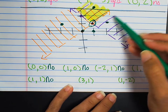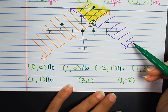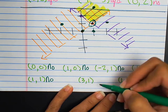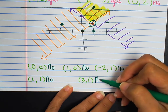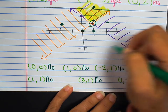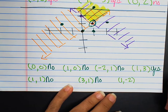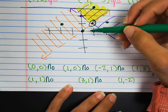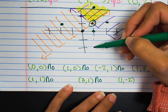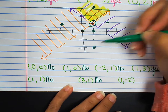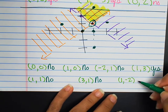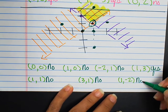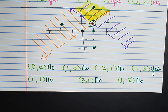Over three, up one. This is a solution to the purple inequality, but it is not a solution to the system. And the last one, over one, down two — clearly not in any shaded region, therefore it is not a solution.